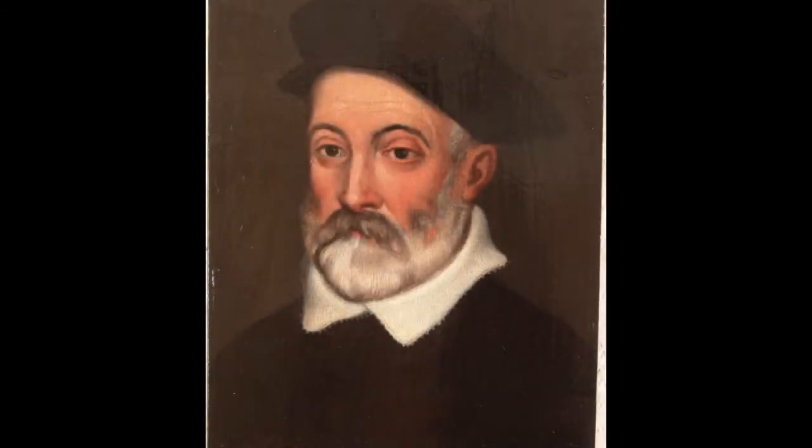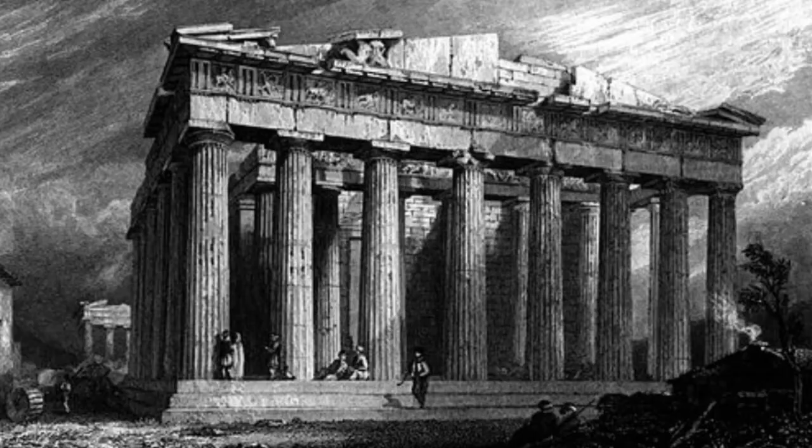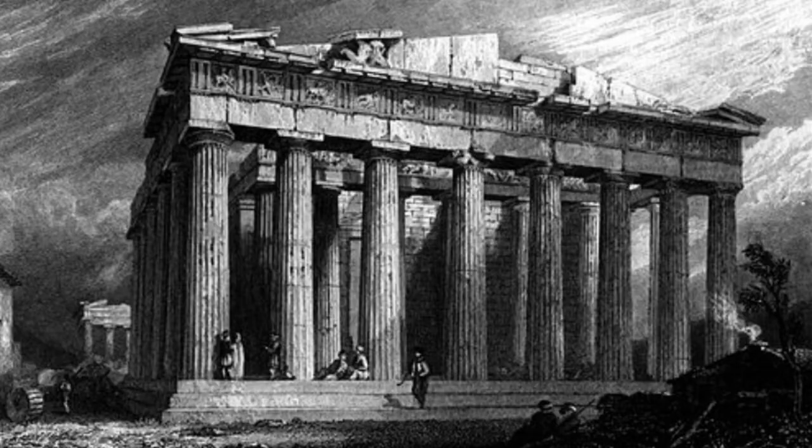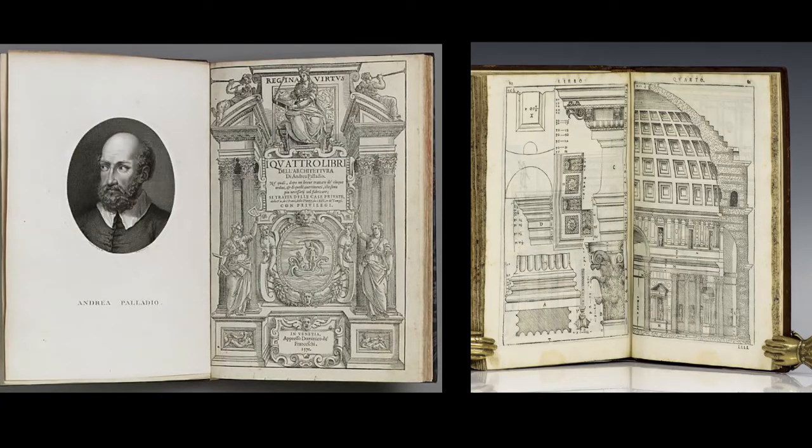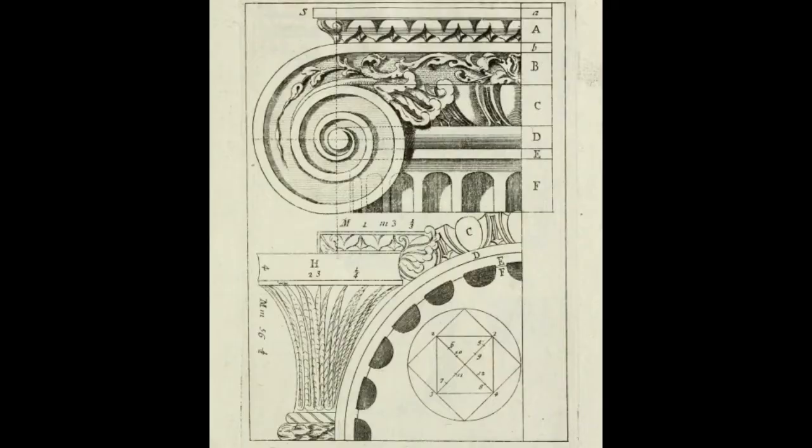However, in the mid-1500s, a stonemason named Andrea di Pietro della Gondola became interested in the architecture of ancient Greece and Rome. He traveled to see classical architecture in person and wrote books to share his new understanding of these ancient structures. He even recorded information on how to create a perfect mathematical spiral.